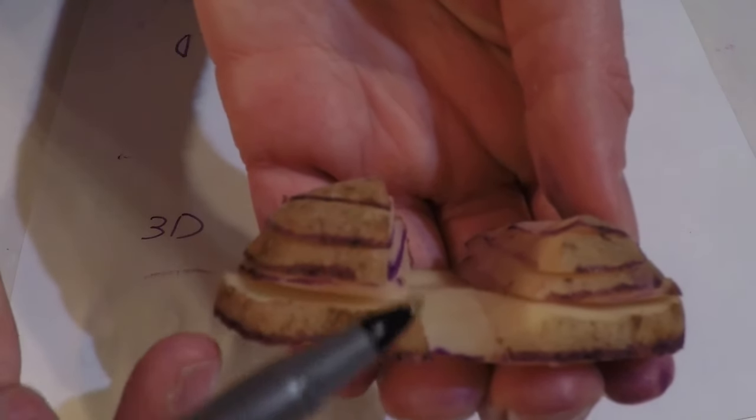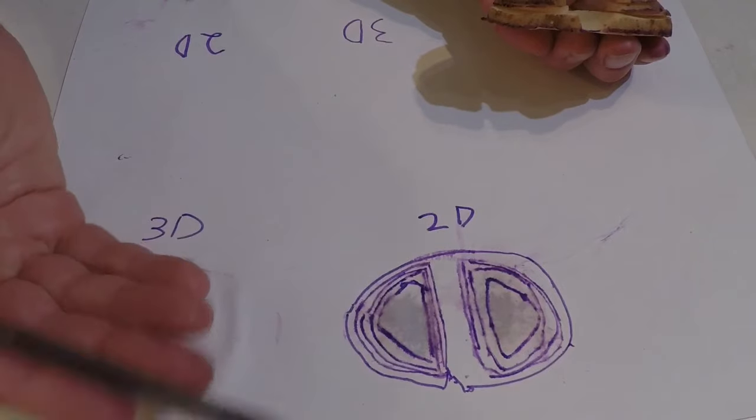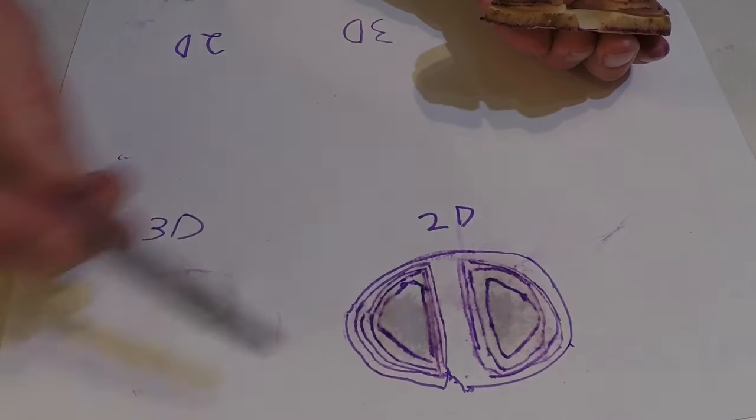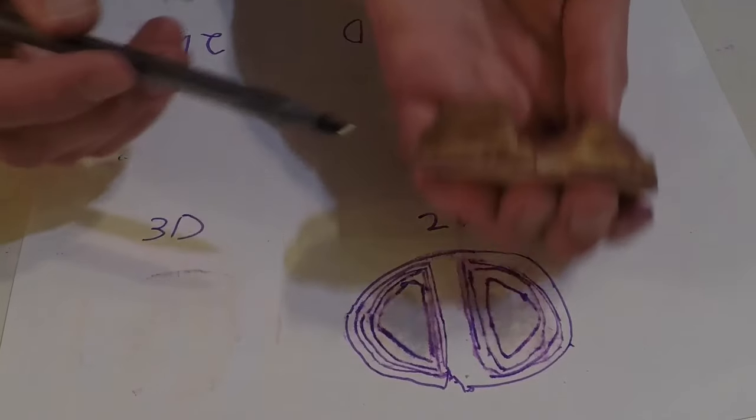This part of the 3D model is represented on the topographic map right here. What does it mean when those lines are close together? Please answer in Polaris. What does it mean when those lines are far apart? Please answer in Polaris.